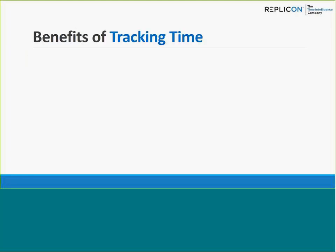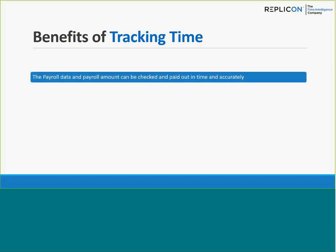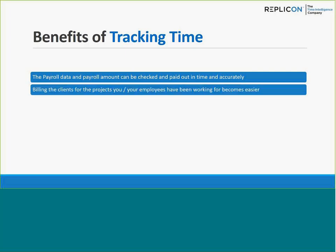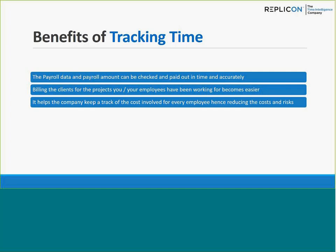Let's start with the benefits of time tracking. The first is capturing your payroll data — with Replicon, the payroll data and amount can be checked and paid out in time and accurately. All you have to do is capture time and leave the payroll calculation to Replicon. The next benefit is billing the client for projects your employees have been working on, which becomes much easier because all projects are already input in the system. You just capture those projects, clients, and tasks on your timesheet and put in your time against them. Time tracking also helps the company keep track of costs per employee, and Replicon makes it easy to calculate total costs involved per employee based on the time entered.